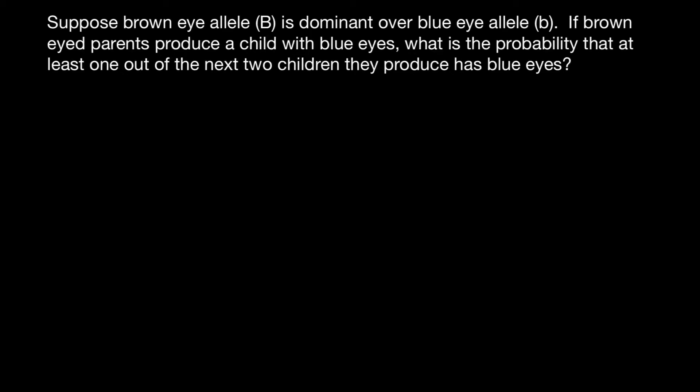Hello and welcome to Nikolai's genetics lessons. Today's problem I got from one of my subscribers. Suppose the brown eye allele, capital B, is dominant over the blue eye allele, small b. If brown-eyed parents produce a child with blue eyes, what is the probability that at least one out of the next two children they produce has blue eyes?